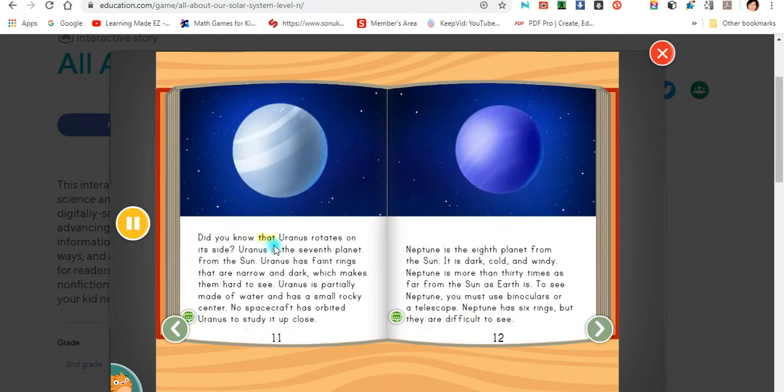Did you know that Uranus rotates on its side? Uranus is the seventh planet from the sun. Uranus has faint rings that are narrow and dark, which make them hard to see. Uranus is partially made of water and has a small rocky center. No spacecraft has orbited Uranus to study it up close.